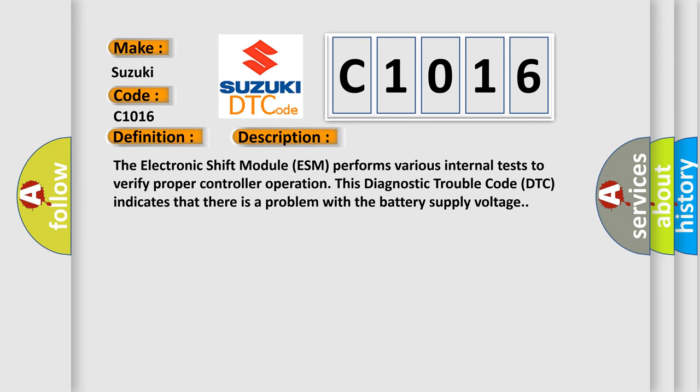The electronic shift module ESM performs various internal tests to verify proper controller operation. This diagnostic trouble code DTC indicates that there is a problem with the battery supply voltage.